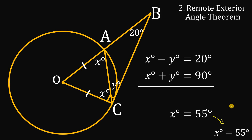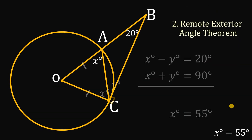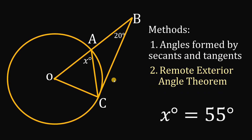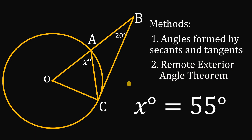Therefore, using two different methods — angles formed by secants and tangents, and the remote exterior angle theorem — we confirm that the measure of angle X equals 55 degrees. And as always, we are done.